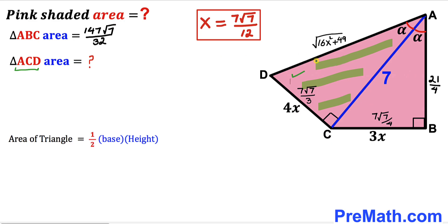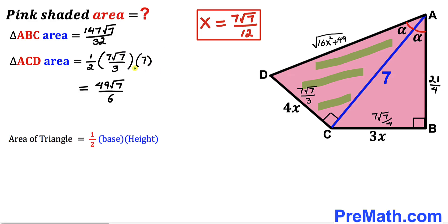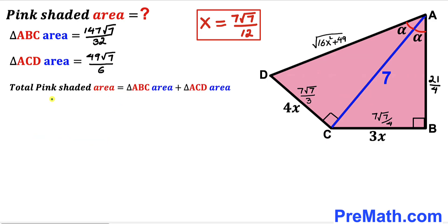Now we are going to calculate the area of the other right triangle ACD using the same area formula. The base is 7√7/3 and the height is 7, so the area of triangle ACD = ½ × (7√7/3) × 7 = 49√7/6.